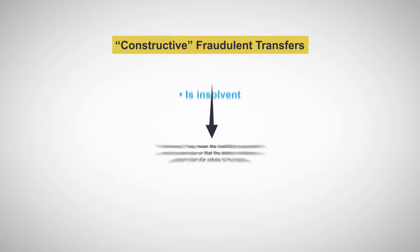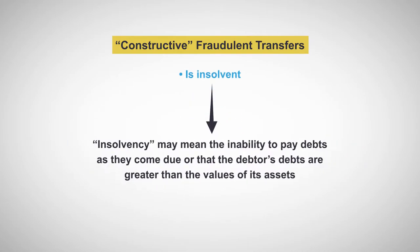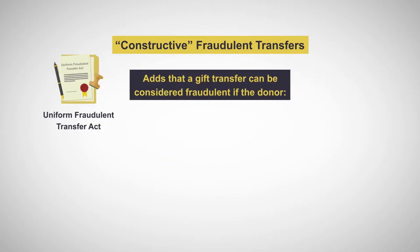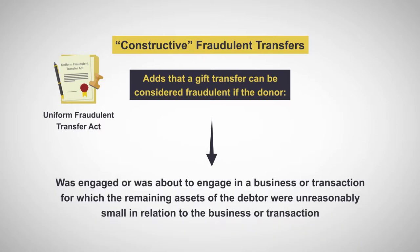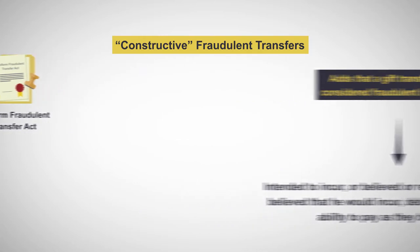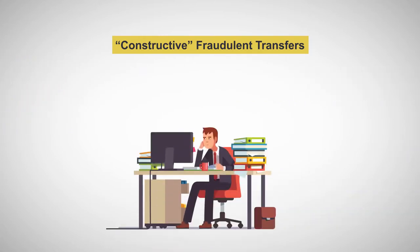For these purposes, the term insolvency may mean the inability to pay debts as they come due, or that the debtor's debts are greater than the values of its assets. The Uniform Fraudulent Transfers Act adds that a gift transfer can be considered fraudulent if the donor was engaged or about to engage in a business or transaction for which the remaining assets of the debtor were unreasonably small in relation to the business or transaction, or intended to incur — or believed or reasonably should have believed — that he would incur debts beyond his ability to pay as they become due.